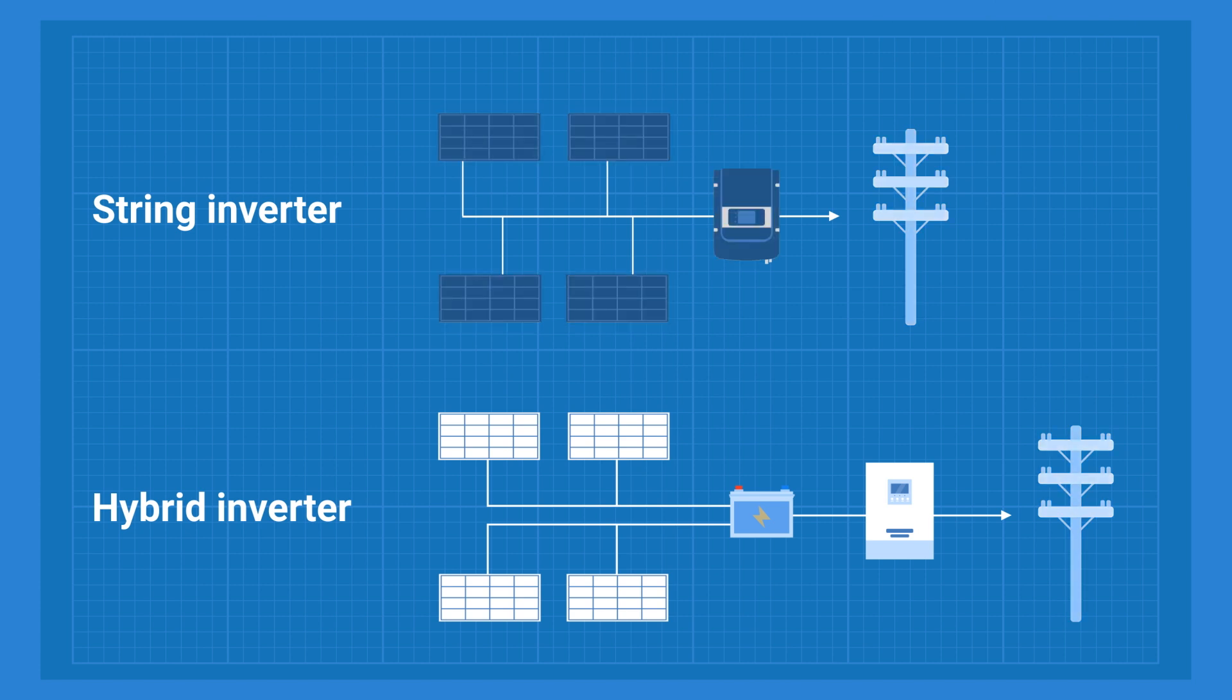When there is a power outage, a standard string inverter just shuts down - it's a safety requirement. The grid must be free of current for workers to repair it. This also means that you can't use energy from your solar panels during an outage. A hybrid inverter keeps the solar system running and switches your house to battery support.